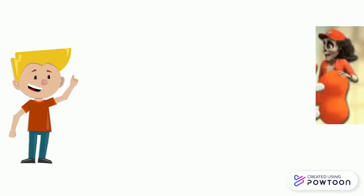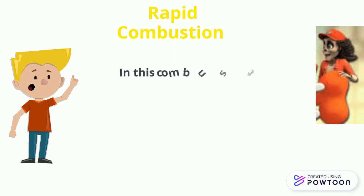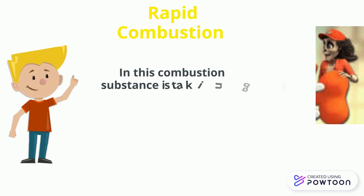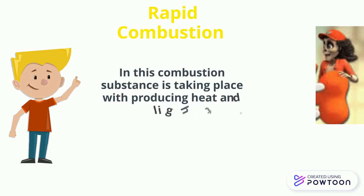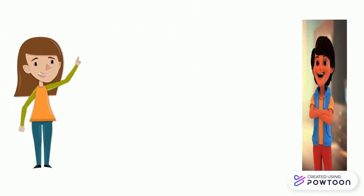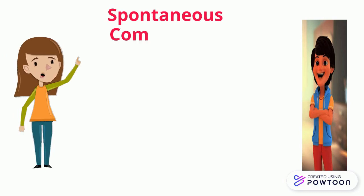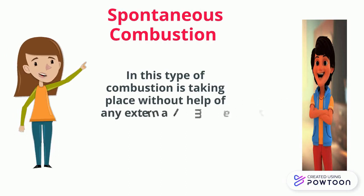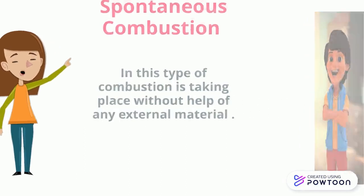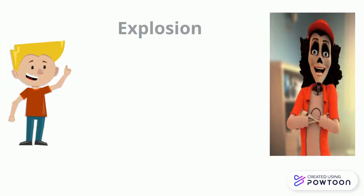What is rapid combustion? In this combustion, burning is taking place producing heat and light. What is spontaneous combustion? In this type of combustion, burning is taking place without the help of an external source.